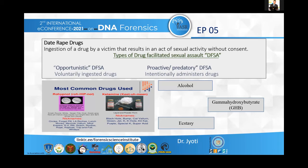Then comes ketamine, which is widely abused for hallucination and has dissociative effects in humans. Its street names include K-hole, Kit-Kat, and Purple. It comes in the form of liquid as well as white powder. Rohypnol also comes in the form of white powder and white tablets. Then comes alcohol, which is a very prevalent drug because it is widely and socially accepted, and it is commonly associated with other drugs used in sexual assault.